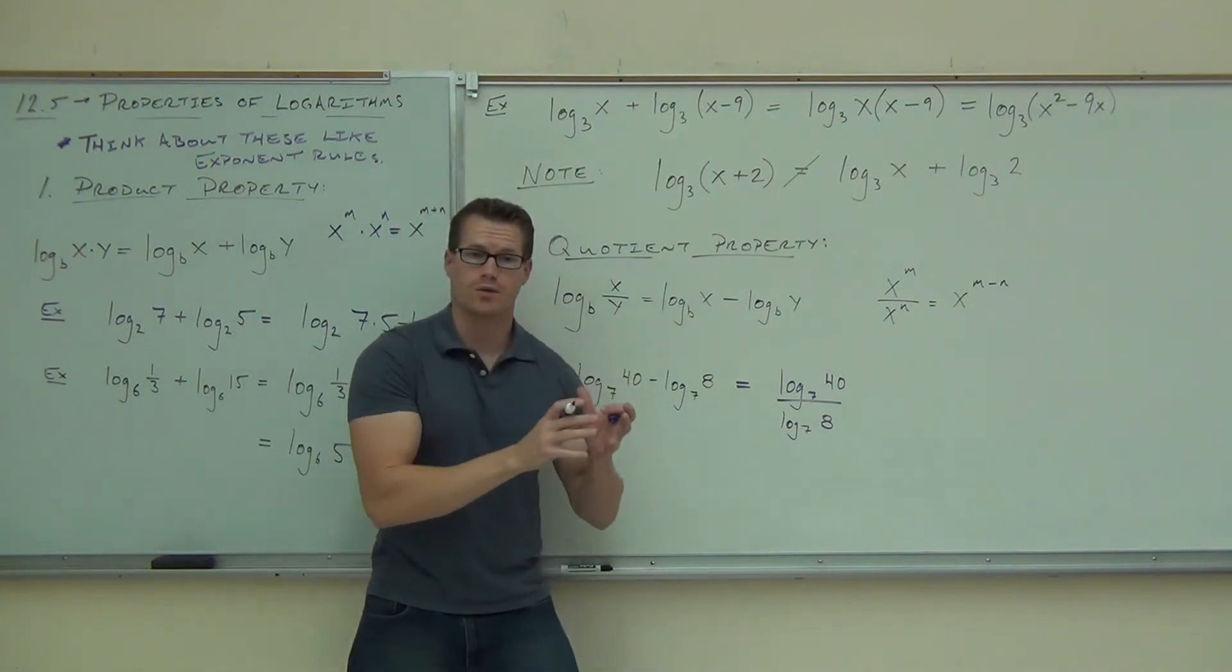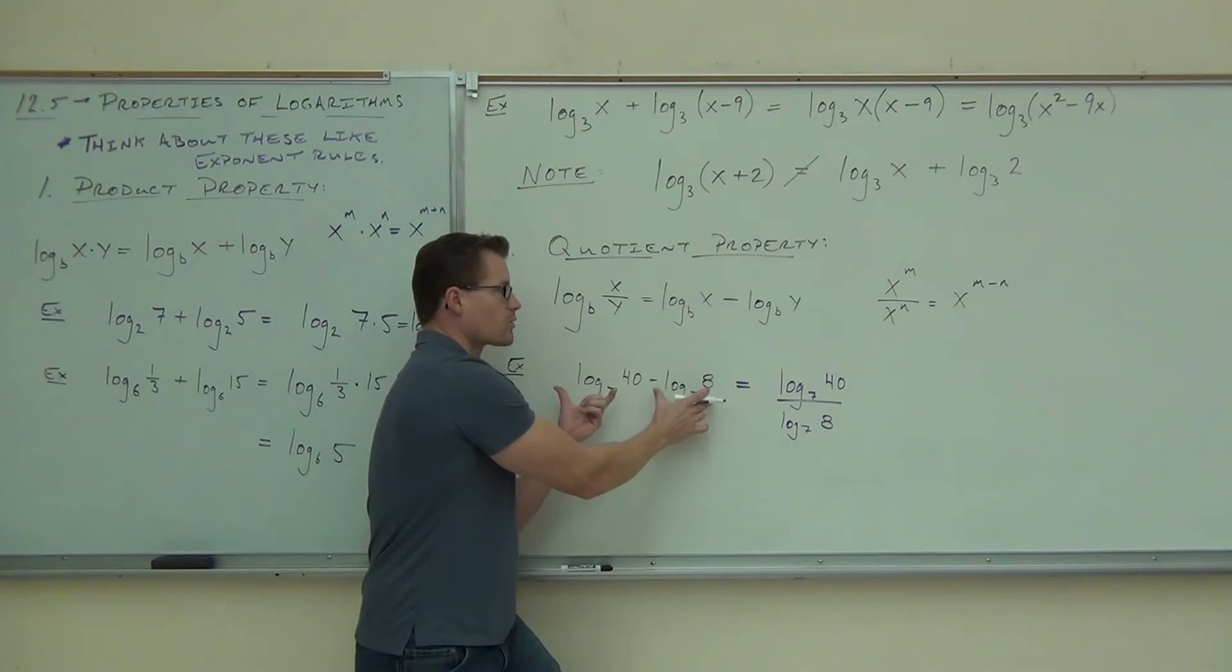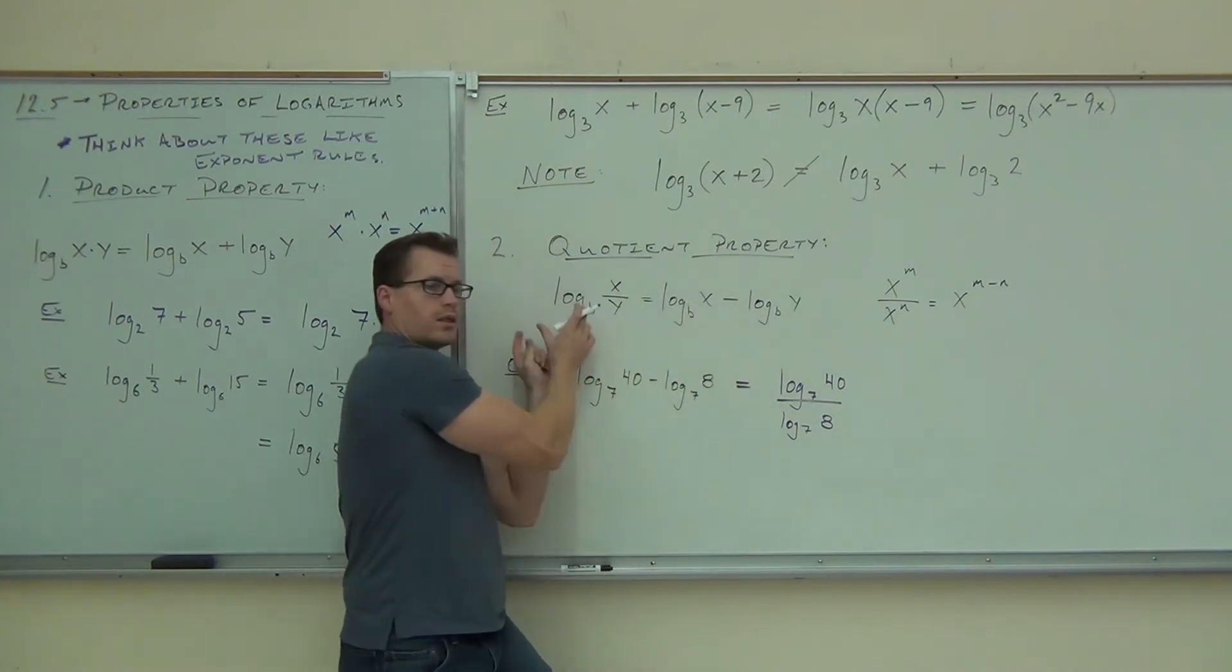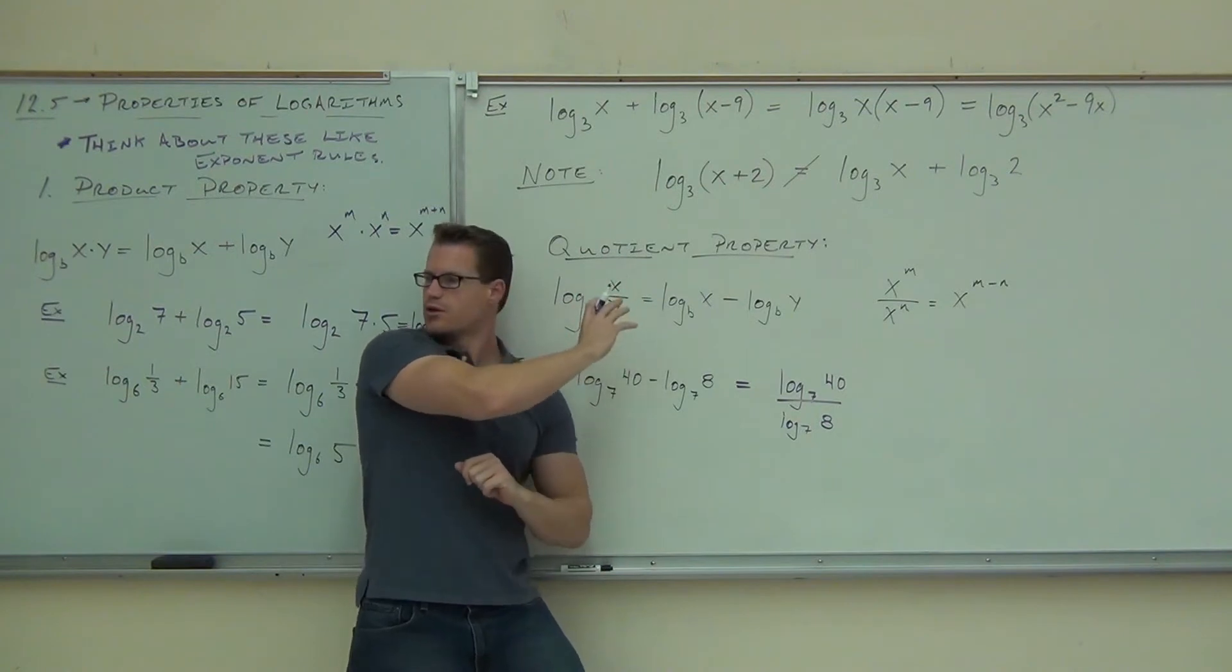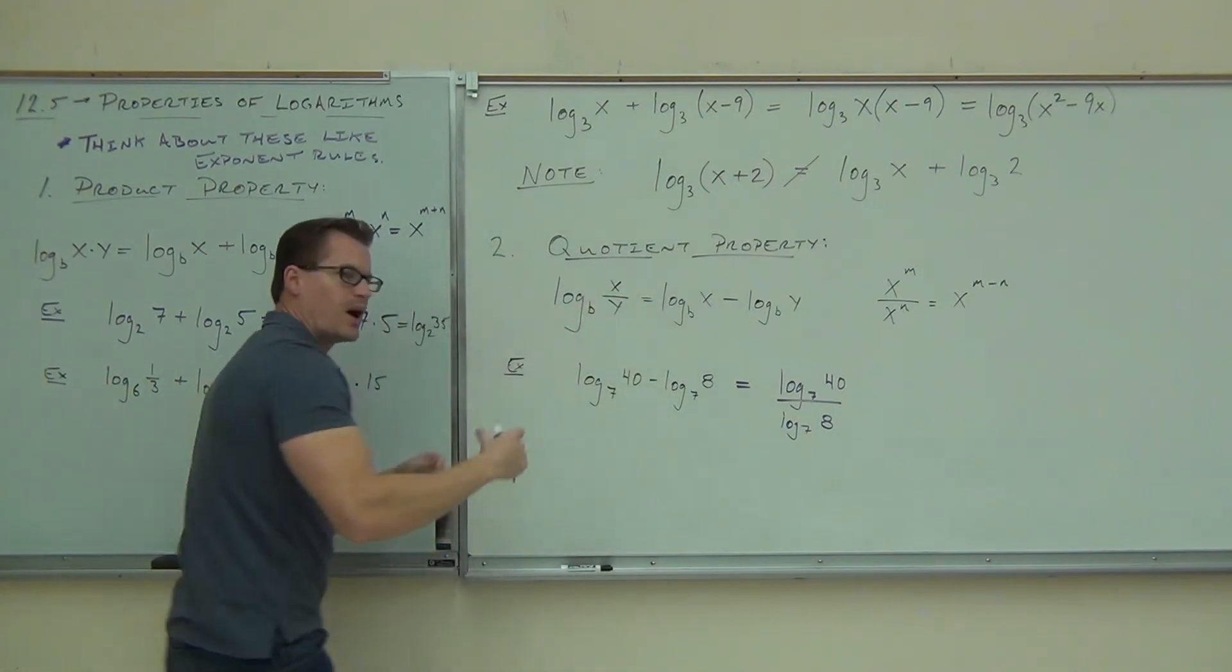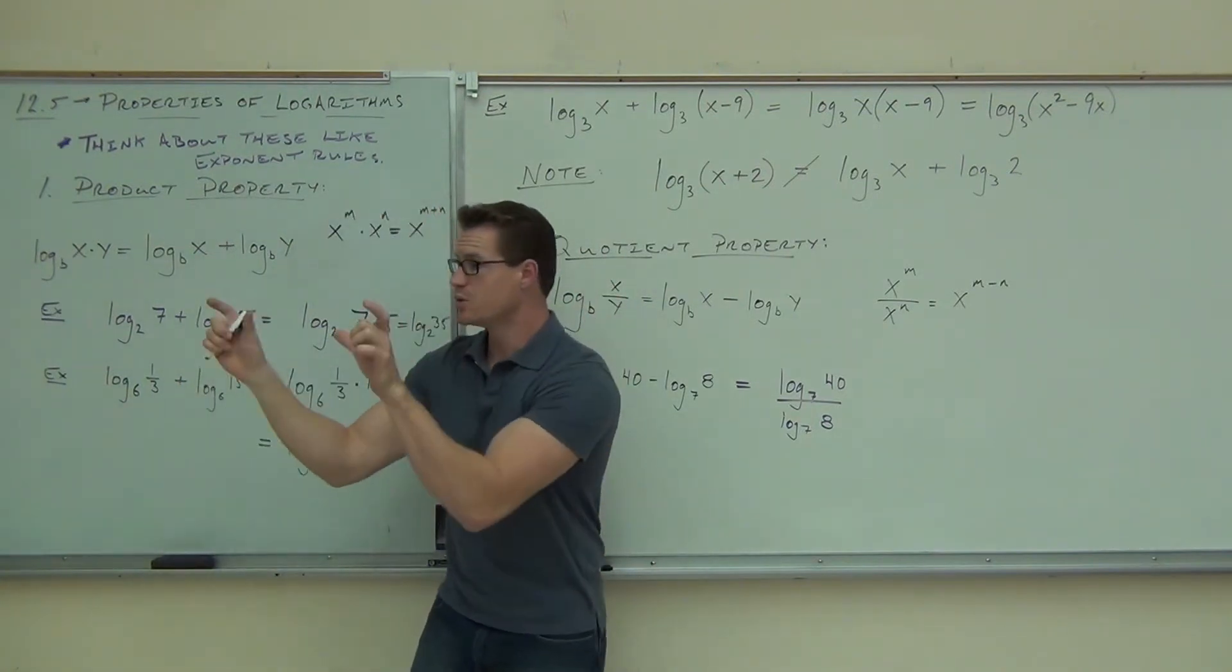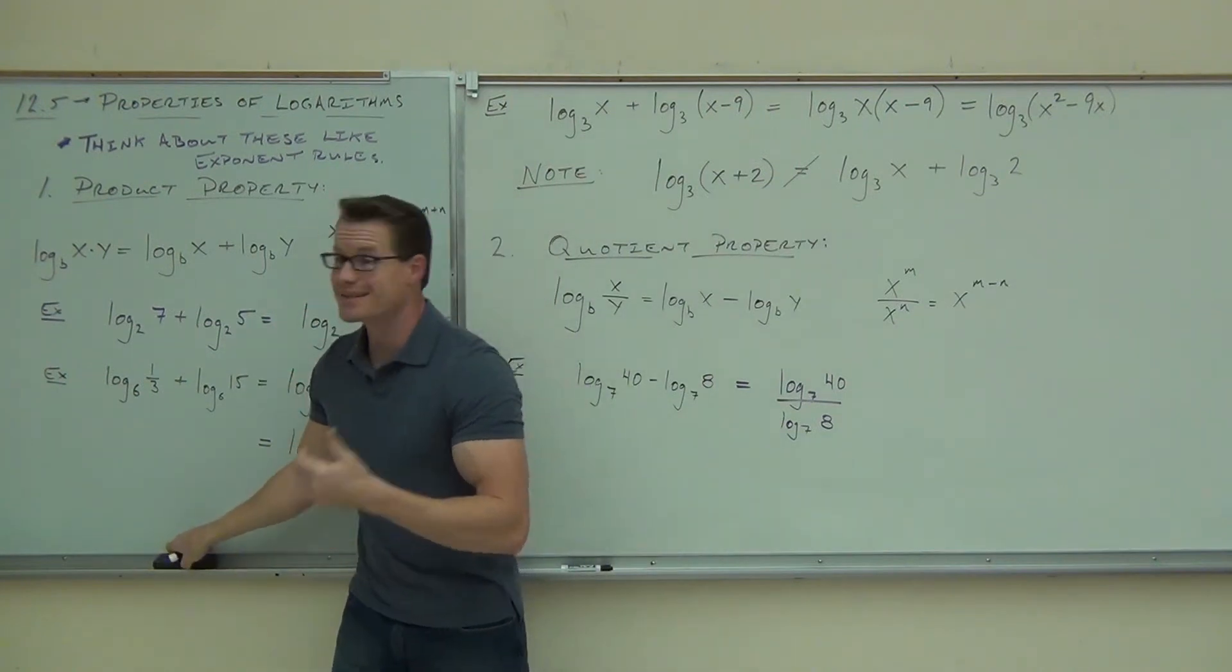When you're combining logarithms, you're changing two logarithms into one logarithm. Not one logarithm over another logarithm. You see there's not another logarithm over there. It's really combining your logarithms. It's changing two of them into one of them using that property.